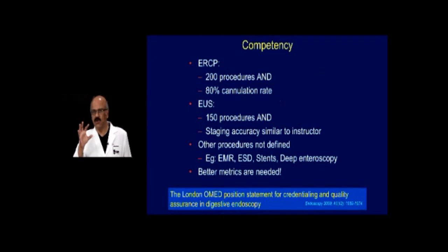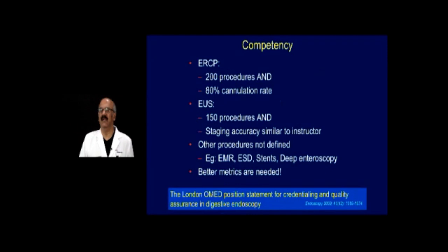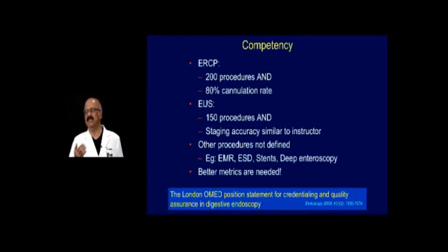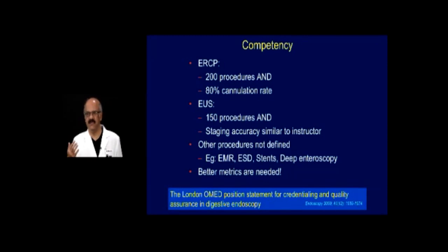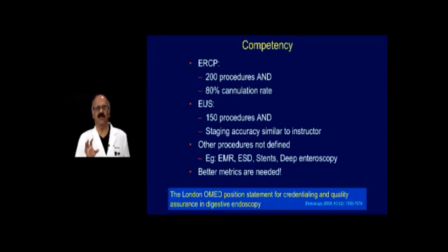All societies have guidelines on when you become competent in endoscopy, though competency is very difficult to assess objectively, so they give numbers: 200 ERCPs with 80% cannulation rate, or 150 EUS with staging accuracy similar to the instructor. There are also guidelines for EMR, ESD, and POEM. Unfortunately these vary by individual society. I believe the best way to assess candidates is the DOPS technique — Direct Observation of Procedural Skills — done by the Joint Advisory Group (JAG) from UK, probably the best training oversight body, which oversees colonoscopy training for all UK residents.